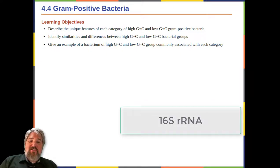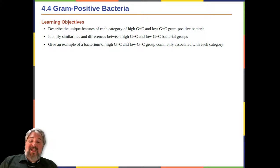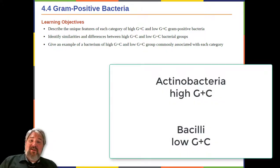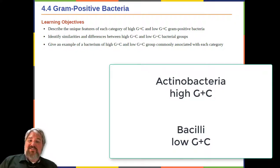Microbiologists currently recognize two distinct groups of Gram-positive or weakly staining Gram-positive prokaryotes. The class Actinobacteria comprises the high-GC Gram-positive bacteria, which have more than 50% guanine and cytosine nucleotides in their DNA. The class Bacilli comprises low-GC Gram-positive bacteria, which have less than 50% guanine and cytosine nucleotides in their DNA.